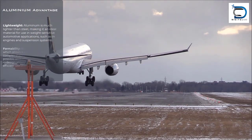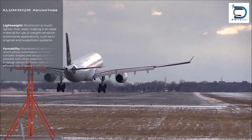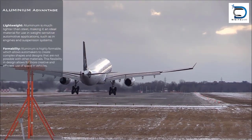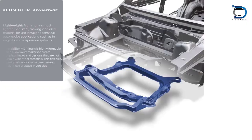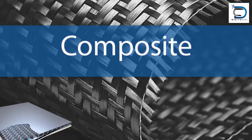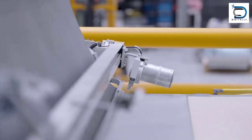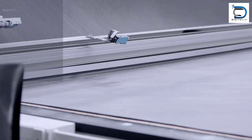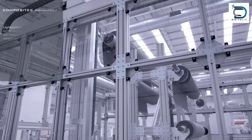Aluminum is a lightweight alternative to steel. It has a high strength-to-weight ratio, which makes it ideal for lightweight construction. However, aluminum is relatively expensive compared to steel.